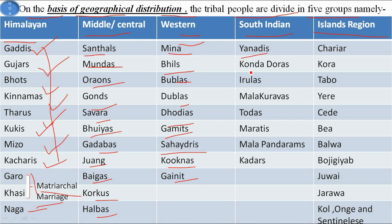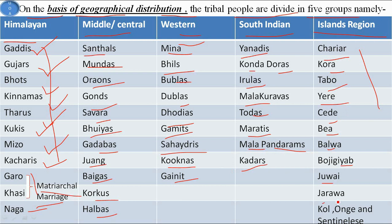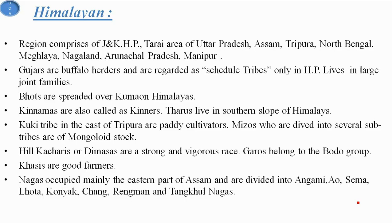In Southern India, the tribes include Yanadis, Konda Doras, Irulas, Malakurvas, Todas, Marathis, Malapandarams, and Kadars. In the island regions, tribes include Chariar, Kora, Tabo, Yeri, Sedi, Bee, Balwa, Bojijiab, Juvai, Jarawa, Kol, Ong, and Sentinels. These island tribes are basically in the Andaman and Nicobar Islands.